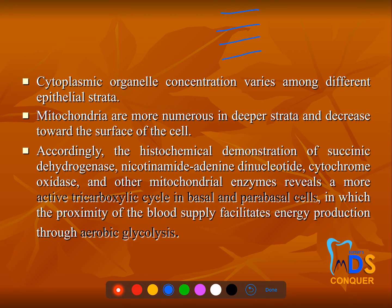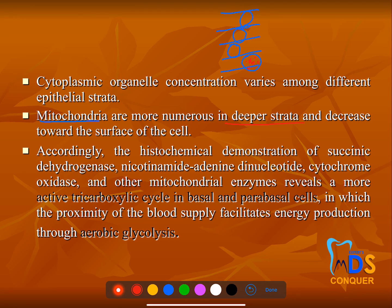The epithelium has various strata or layers, each with different cell organelles. Mitochondria — the powerhouse of the cell — are more numerous in the deeper strata. This means the lower layers are very active and participate in all types of reactions, including aerobic glycolysis, which is actively seen in the lower layers.